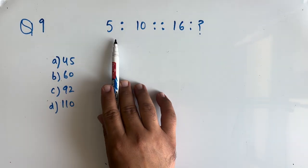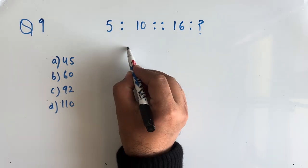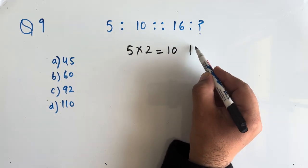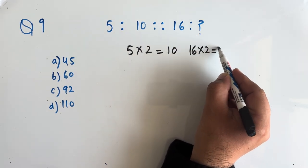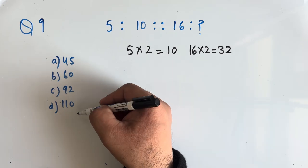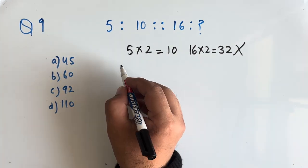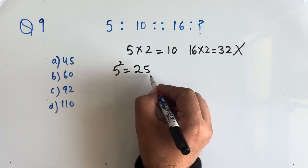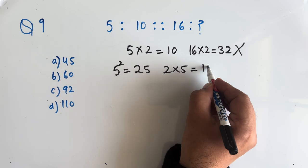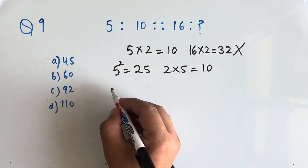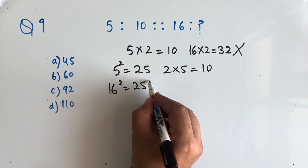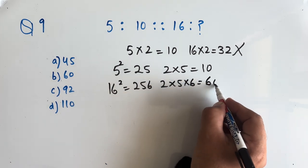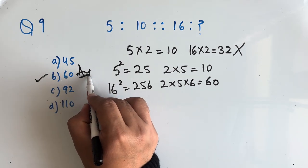Now question number 9: 5 is to 10, what is 16 is to? If we multiply 5 by 2, we get 10. In the similar way, if we multiply 16 by 2 we get 32. But 32 is not in the option, so we try another way. 5 squared is 25, and if we find the product of digits, 2 into 5 is 10. In the similar way, 16 squared is 256, and if we find the product of digits we get 60. So option B, 60 is the correct answer.